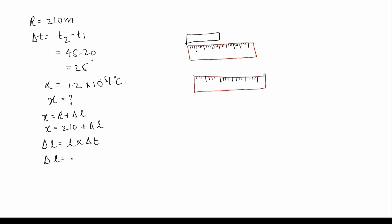So delta L equals L times alpha times delta T, where L is 210, alpha is 1.2 into 10 to the power of minus 5, and delta T is 25. So delta L equals 210 into 1.2 into 25, which gives 6300 into 10 to the power of minus 5, equal to 0.063.